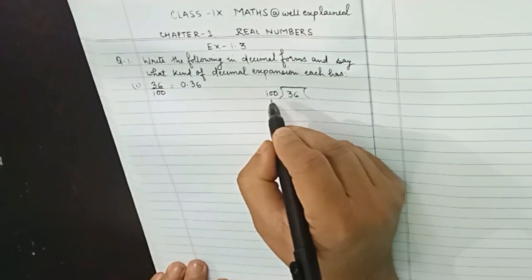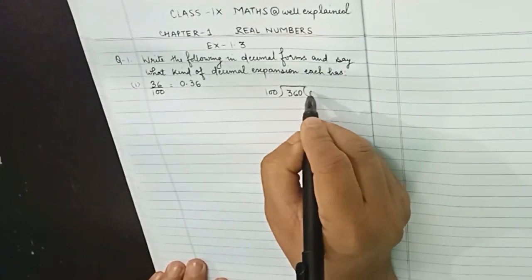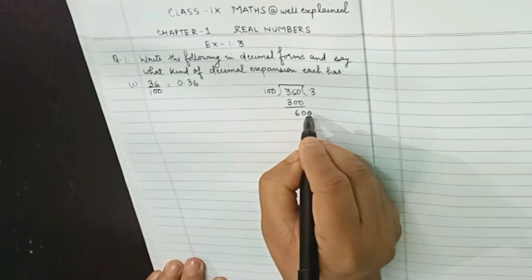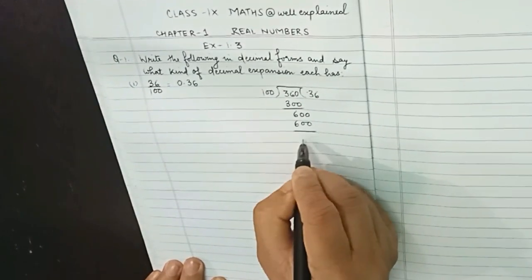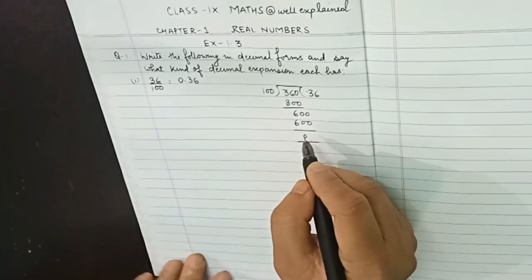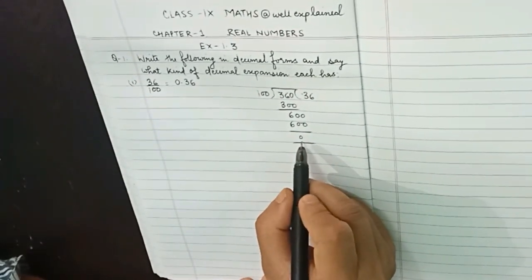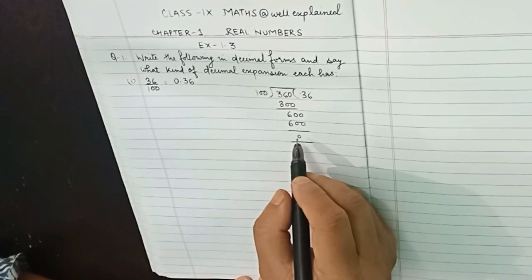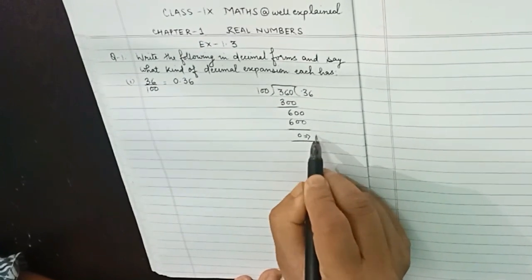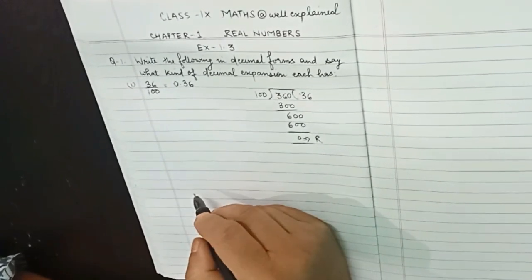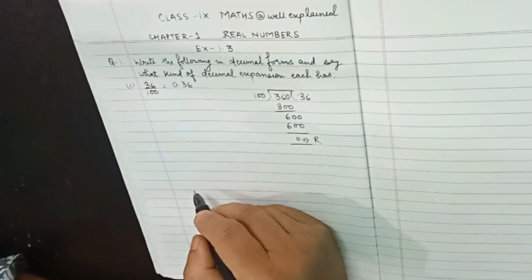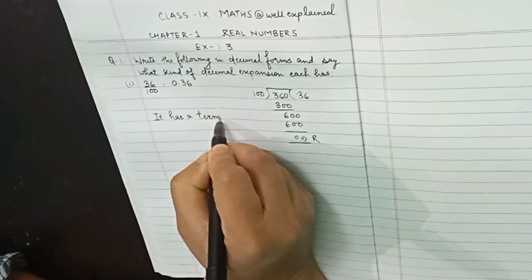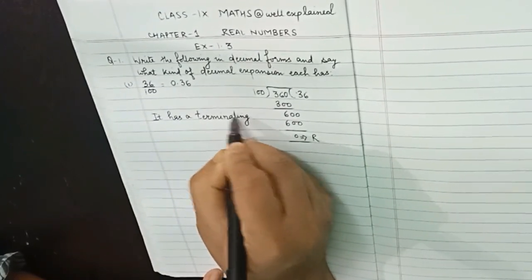The other method is dividing 36 by 100. As 36 is smaller than 100, you put a decimal. After two steps you will see that the remainder is zero. So whenever we divide a numerator by a denominator and the division is completed leaving a zero remainder, the decimal expansion is said to be a terminating decimal expansion.